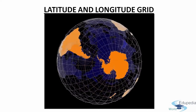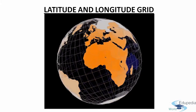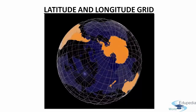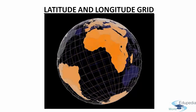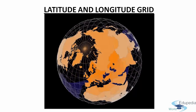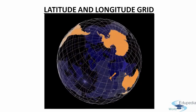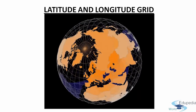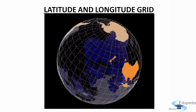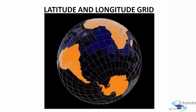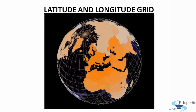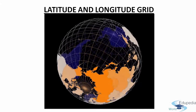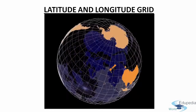You all must be knowing about the latitude and the longitude lines that run over the globe. The lines of longitude run vertically and are also called meridians. The prime meridian is found in Greenwich, England, and is the zero degree longitude. There are 180 degrees of east longitude and 180 degrees of west longitude, and they form an imaginary grid over the earth's surface.